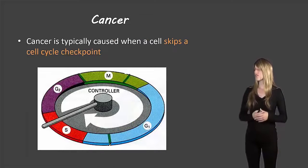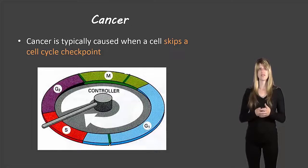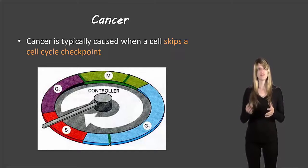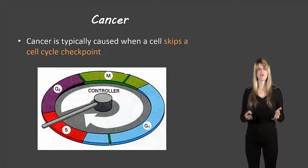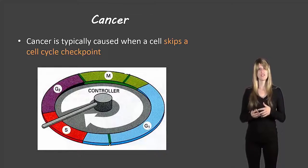Cancer is typically caused when a cell skips a cell cycle checkpoint. Often it's when the DNA or the chromosomes are dividing and there's some sort of error in the division of the DNA. Usually in the gap two phase there's a check to make sure that the cell has divided its DNA properly. If the cell skips that step, you can end up with mutations in the DNA, and that's when you can end up with cancer.